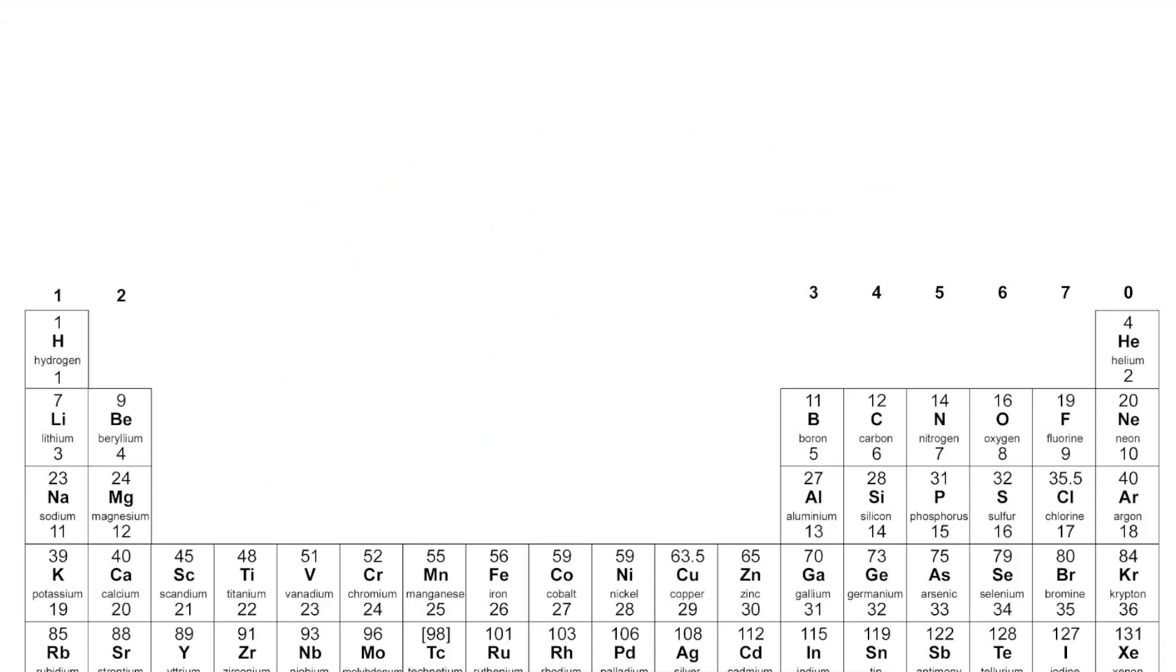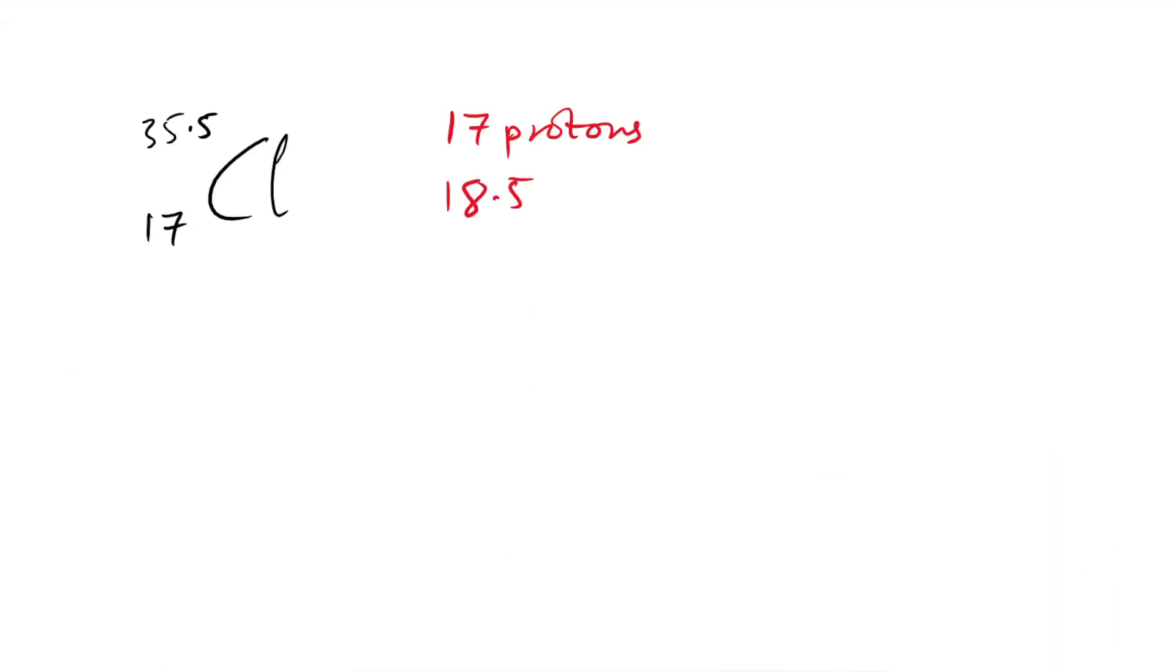So fairly easy so far. Lithium has a mass of seven, beryllium has a mass of nine - four protons, five neutrons. However, hold up a second. When we get to chlorine, we see that we have a mass of 35.5. What is that all about? Surely that's impossible. How is it possible for it to have 17 protons and 18 and a half neutrons? Well, of course it can't.